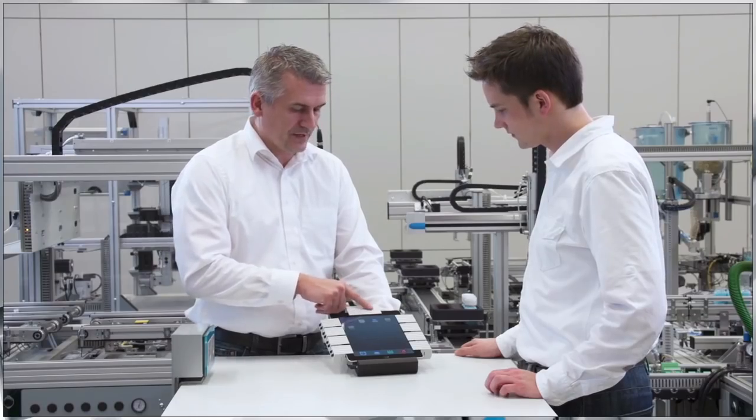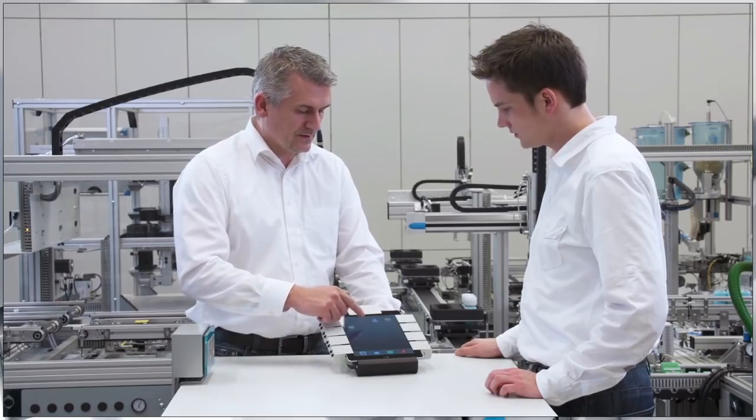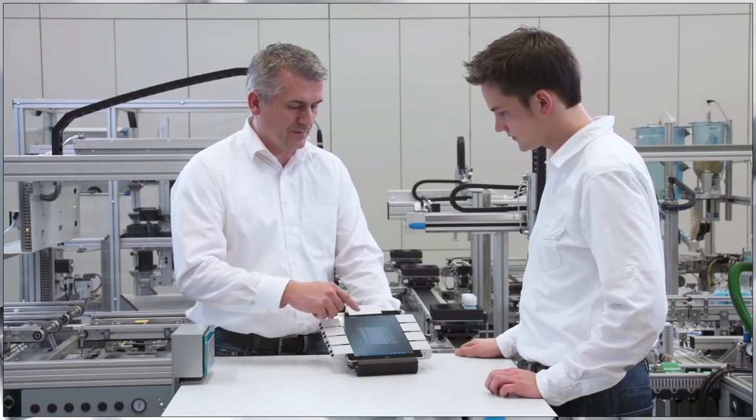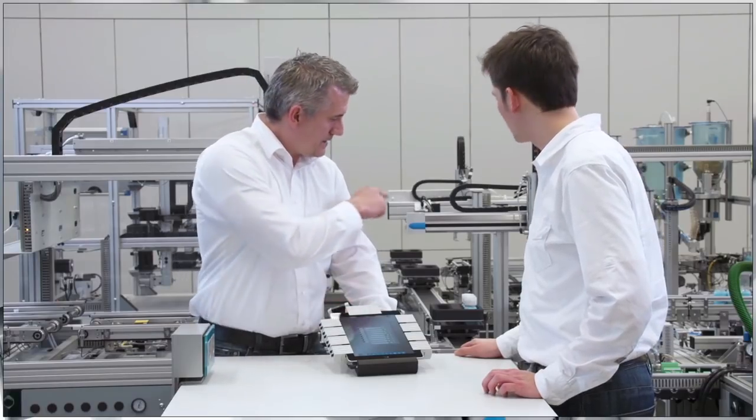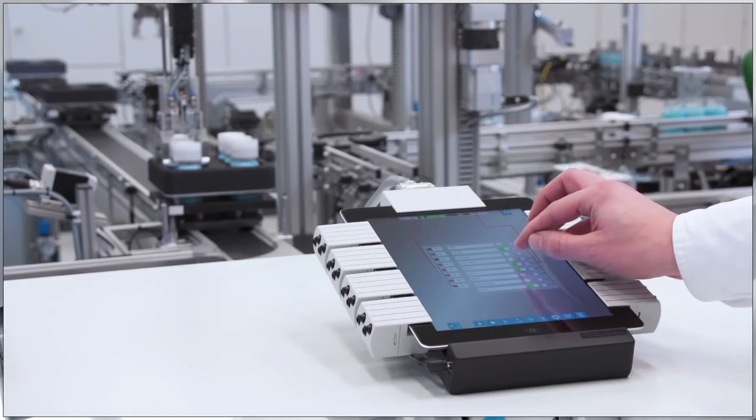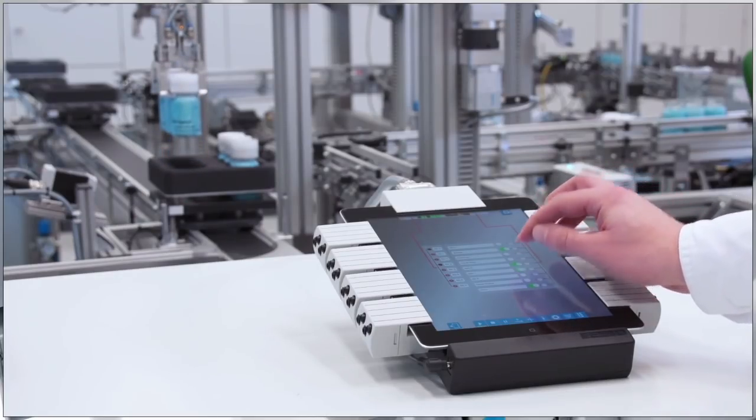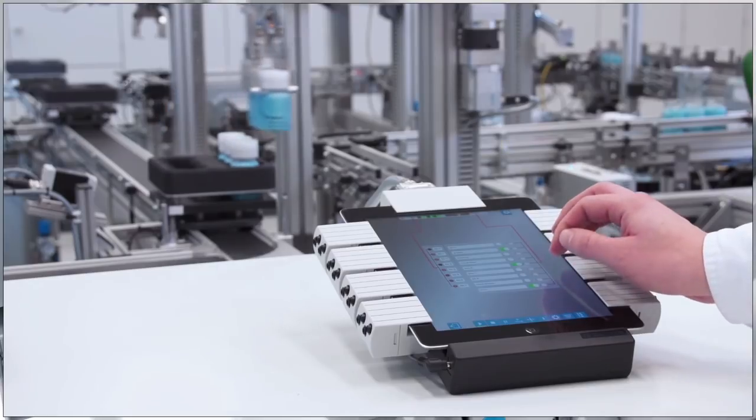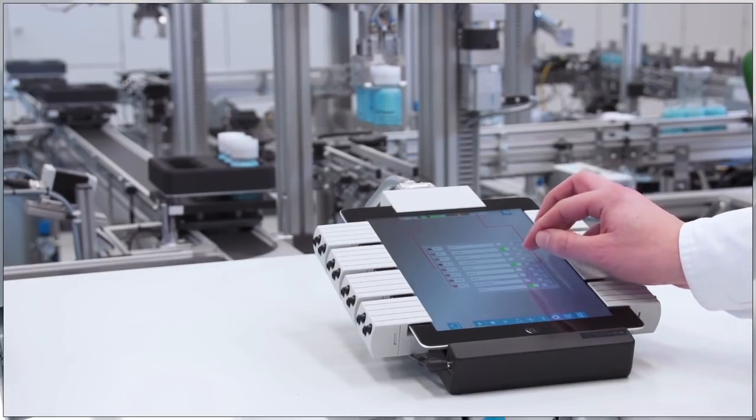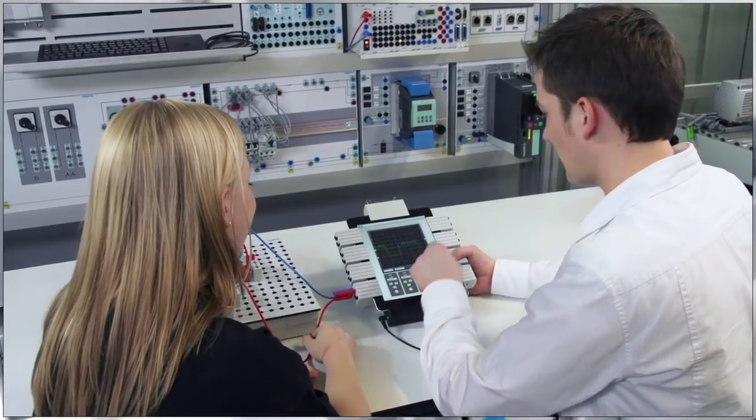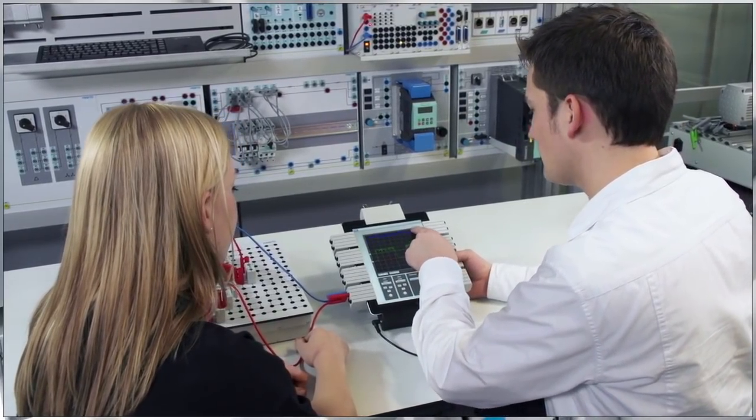Our learning systems place students in real-life situations and enable them to quickly gain practical experience of high-tech components used in factory and process automation. The systems cover all relevant fields of automation and manufacturing, from mechatronics, electrical engineering, and logistics to production process optimization. These are complemented by solutions that train problem-solving skills, communication, and quality management.